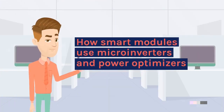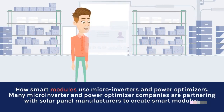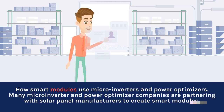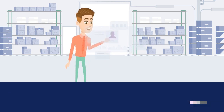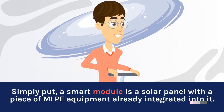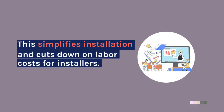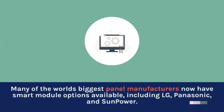How smart modules use microinverters and power optimizers: Many microinverter and power optimizer companies are partnering with solar panel manufacturers to create smart modules. Simply put, a smart module is a solar panel with a piece of MLPE equipment already integrated into it. This simplifies installation and cuts down on labor costs for installers. Many of the world's biggest panel manufacturers now have smart module options available, including LG, Panasonic, and SunPower.